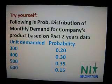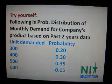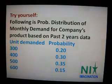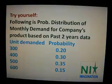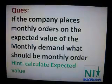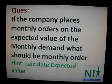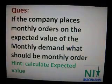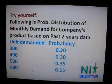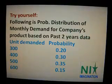I have a question for you which you can solve yourself. The following is a probability distribution of monthly demand for a company's product based on past 2 years — meaning it's the company's experience. Unit demands and their probabilities are given. If the company places a monthly order on the expected value of monthly demand, what should the monthly order be? Hint: calculate the expected value. The answer must be 445 — you can calculate it yourself.